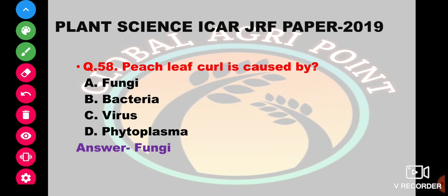Peach leaf curl is the only leaf disease caused by a fungus. Other leaf curl diseases are caused by viruses. So the answer is caused by fungi.